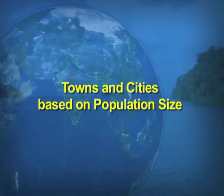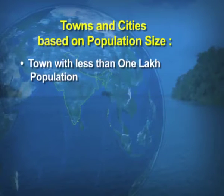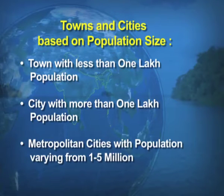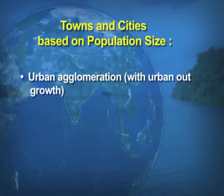Cities are known by either their size or the function they are important for. Towns and cities based on population size: towns with less than 1 lakh population, cities with more than 1 lakh population, and the metropolitan city where the population varies between 1 to 5 million. And then there is the urban agglomeration, which includes the urban outgrowth of the city.